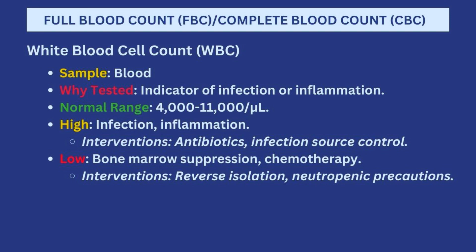Still under full blood count, the next is the white blood cell count. White blood cell levels can easily tell us if the patient has an infection or inflammation. Ideally it should be about 4,000 to 11,000. If the white blood cell level is high, the patient possibly has an infection or inflammation, because white blood cells are the soldiers of the body — if there's an infection they increase to combat it. You'd be expecting to treat the infection with antibiotics, antivirals, or antifungals depending on the cause.